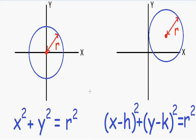Welcome to my video on circles. I want to show you what the equation of a circle looks like before we start an example. On the left hand side we have x squared plus y squared equals r squared. This is the equation of a circle if the center is at the origin, or the point (0, 0). The r in this equation is equal to the radius of the circle — the distance from the center to any point on the edge.